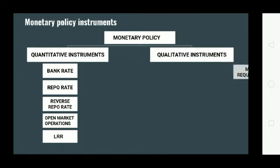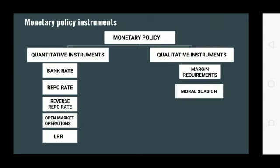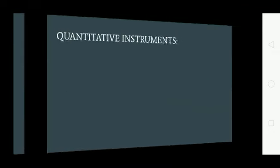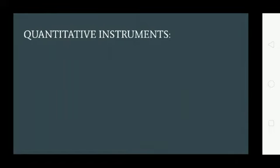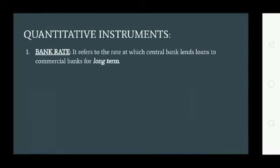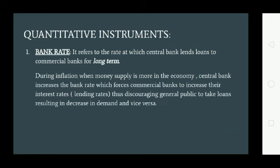The qualitative instruments include: margin requirement, moral suasion, and credit rationing. Regarding bank rate — it refers to the rate at which the central bank lends loans to commercial banks for the long term. During inflation, when money supply is more in the economy, the central bank increases the bank rate, which forces commercial banks to increase their interest rates or lending rates, thus discouraging the general public from taking loans, resulting in a decrease in demand, and vice versa.